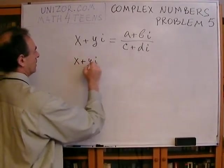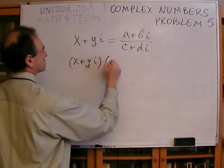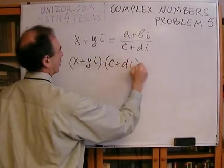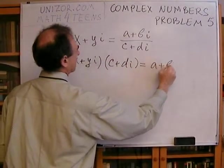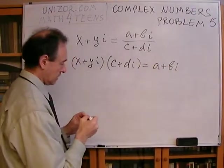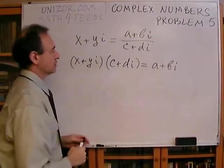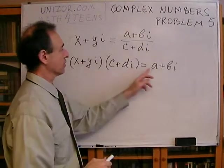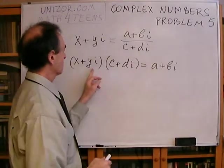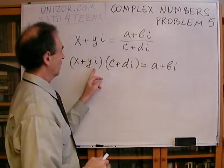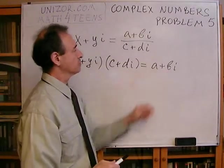So, X plus Y I times C plus D I should be equal to A plus B I. When we are saying that this should be equal, it means real part of this should be equal to A, and the coefficient in the imaginary part should be equal to B.